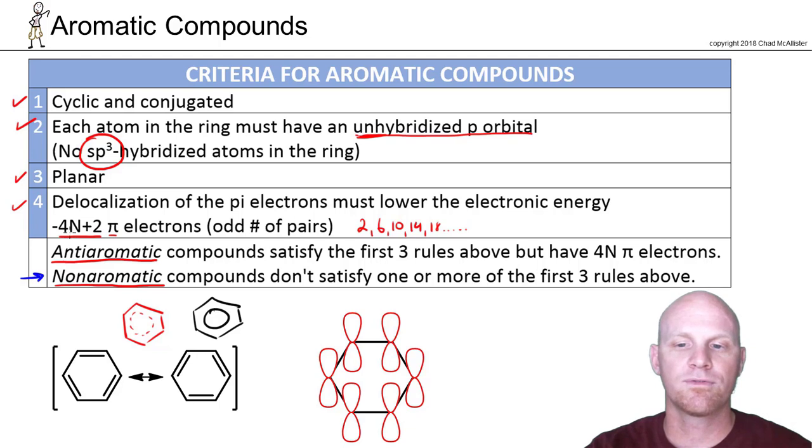But if you pass all the first three rules, so rule number four, 4n plus 2 pi electrons, another way of saying that is an odd number of pairs, but if on the contrast you have an even number of pairs, just simply a multiple of 4 pi electrons, and that could be, you know, 4, 8, 12, all the way up to infinity, if you have any multiple of 4 pi electrons instead, that ends up making you anti-aromatic.